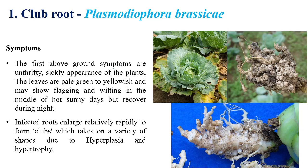Club root symptoms are divided into two types: above-ground parts and below-ground parts, especially on the root region. In the above-ground parts, the size of the flower can be completely reduced.